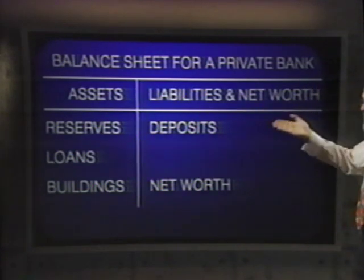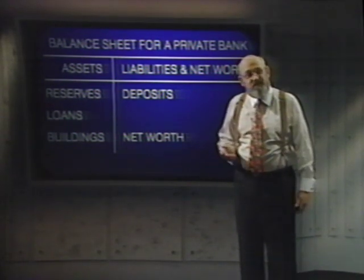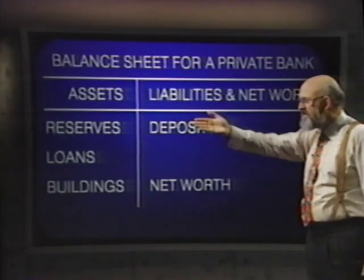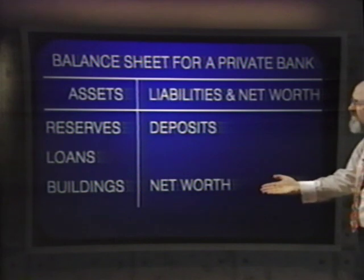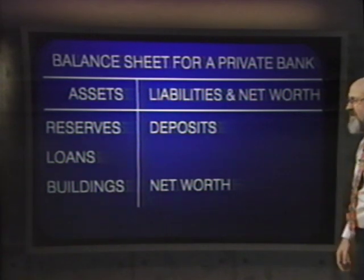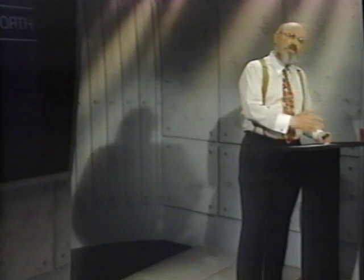On the liability side, the main entry is deposits. These deposits are assets for customers but a liability — an obligation to pay — for the bank. For any healthy business, assets exceed liabilities, and the difference is called net worth. The most common definition of the nation's money supply is the total of everyone's deposits at chartered banks plus any currency circulating outside the banks. For simplicity, we'll focus just on chartered banks.